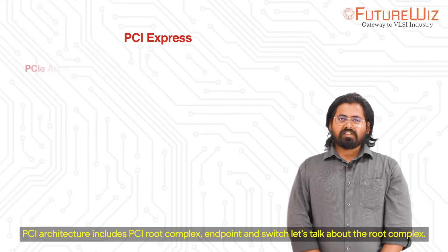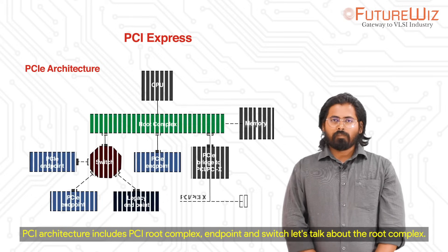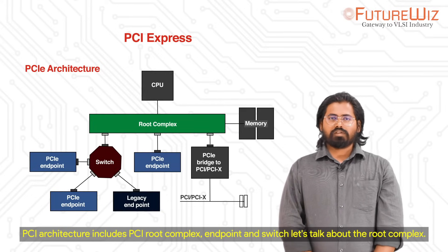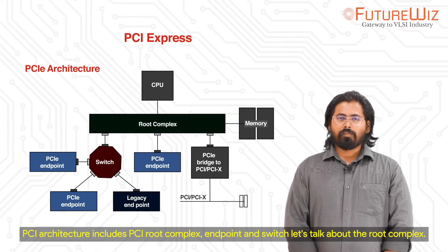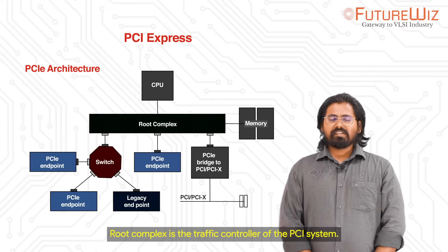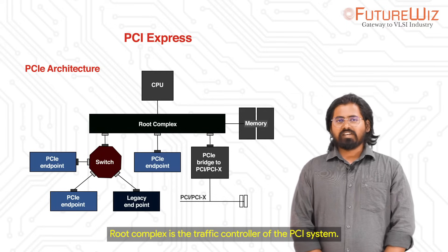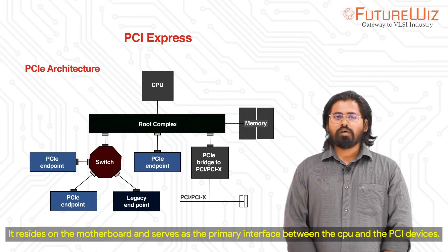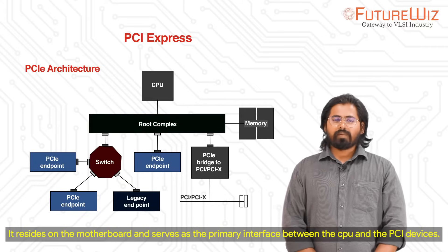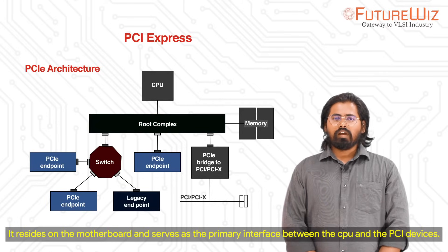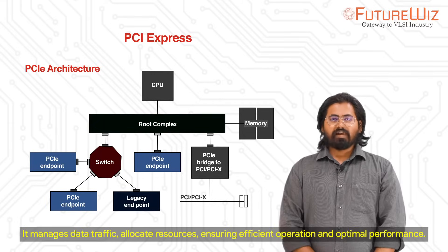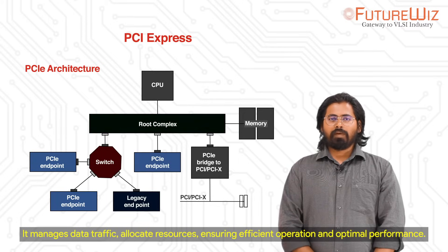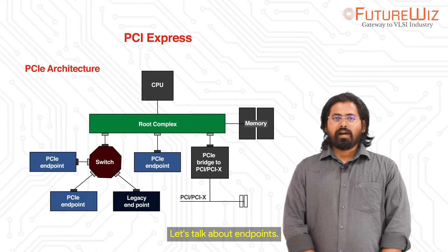PCI architecture includes the PCI root complex, endpoint, and switch. The root complex is the traffic controller of the PCI system. It resides on the motherboard and serves as the primary interface between the CPU and the PCI devices. It manages data traffic, allocates resources, ensuring efficient operation and optimal performance.